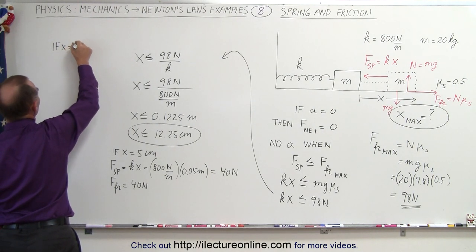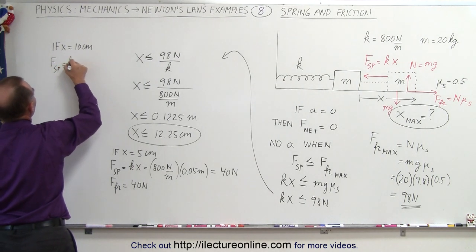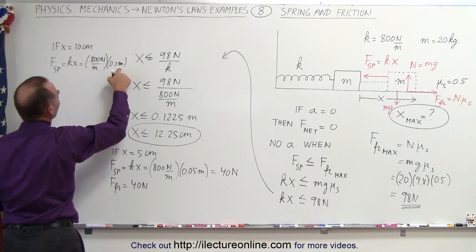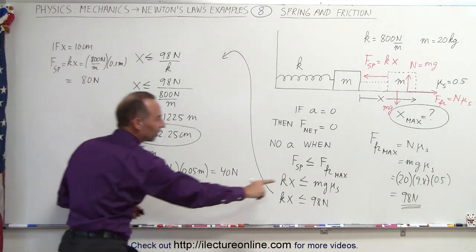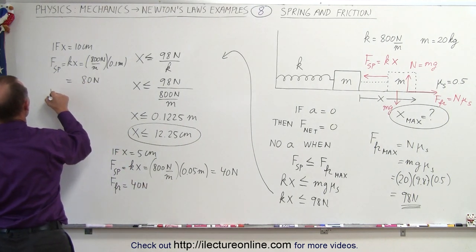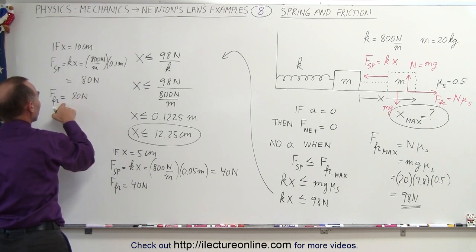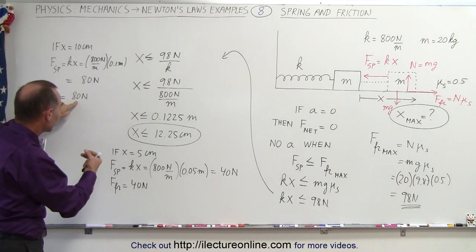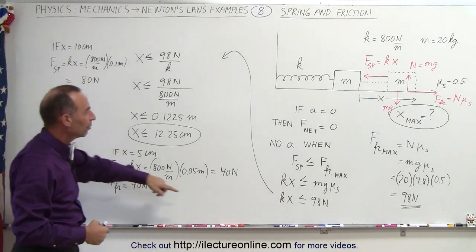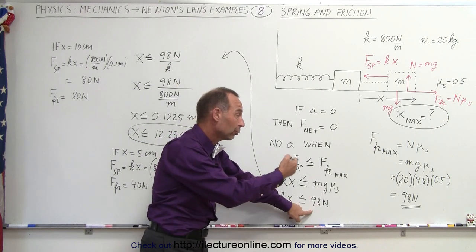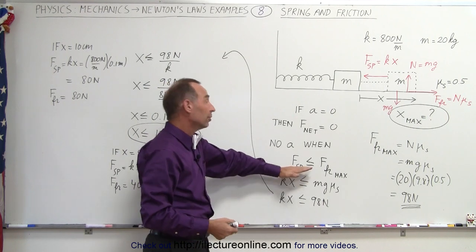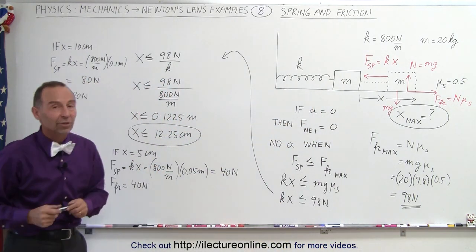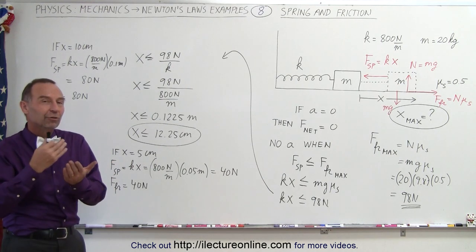If x equals 10 centimeters, the spring force is 800 N/m × 0.1 m = 80 newtons. That's still less than the maximum friction force of 98 newtons, so the friction force will also be 80 newtons — it's a reaction force per Newton's third law. Eventually, when the spring force reaches 98 newtons, the friction force matches it. If you then pull the block a bit more so the spring force becomes 100 newtons, the friction force maximum of 98 newtons is exceeded and the block begins to slide to the left.